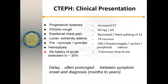On examination, you'll find an increased P2 sound, an RV tap and lift, and narrowed fixed splitting of the second heart sound. A tricuspid regurgitation murmur can be heard with significant pulmonary hypertension. Elevated JVD, hepatomegaly, ascites, and peripheral edema are seen. Uniquely, if you listen over the lung fields, you can often hear the bruit of turbulent flow going through obstructions left by the chronic clot.